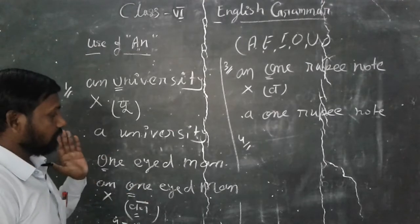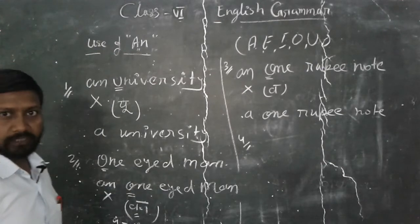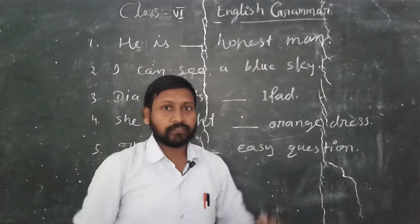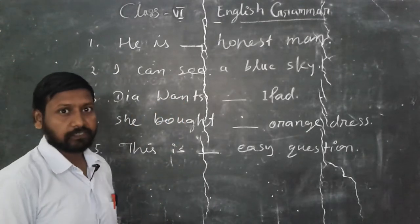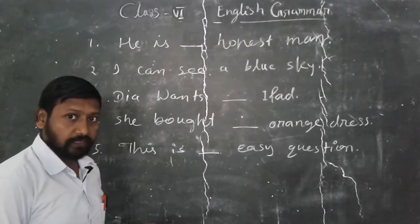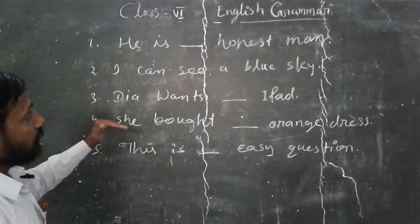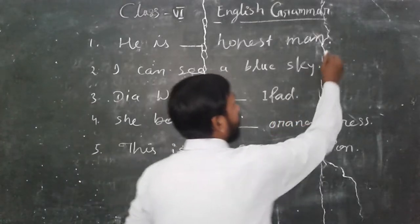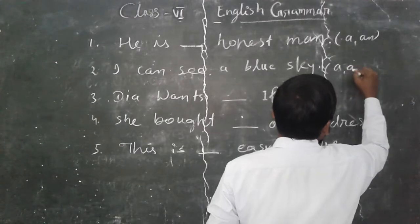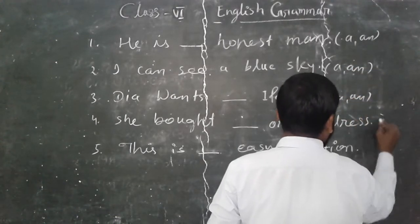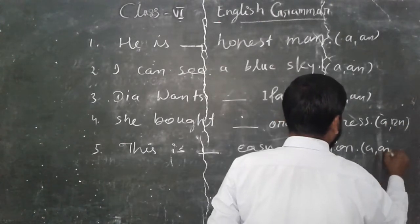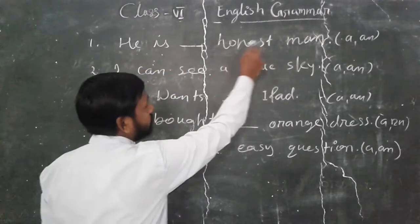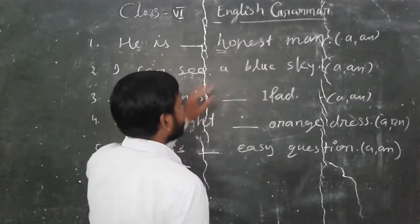Now let's look at some more examples in the form of fill-in-the-blanks. You can see the exercise on the board. You have to use either 'a' or 'an' appropriately. Let's start with the first example: 'He is ___ honest man.' You might think 'h' is a consonant letter in English, so use 'a,' but remember — you need the sound first.